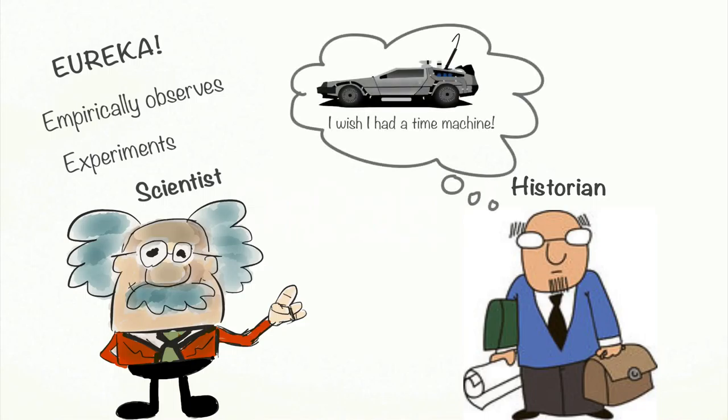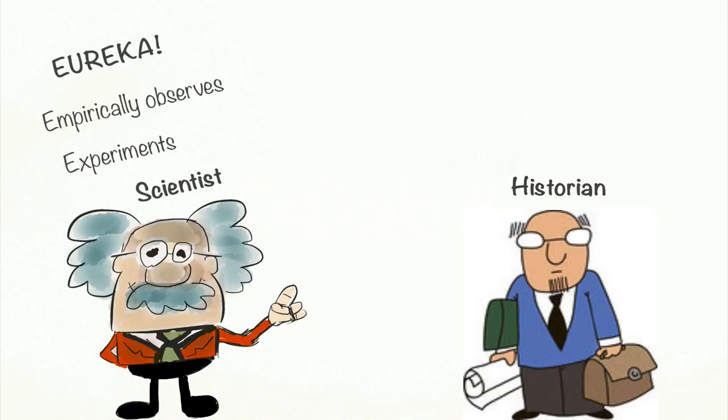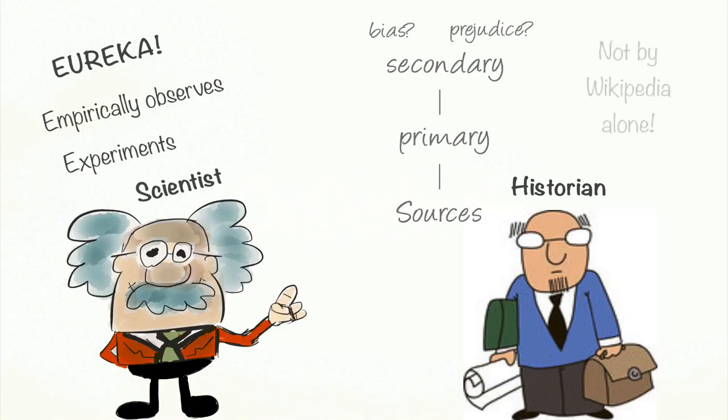But a historian cannot empirically observe that which has happened hundreds of years back. So a historian relies on sources, primary and secondary, analyzes their provenance by looking for biases and reliability, and validates by triangulation, looking at multiple sources of information to find evidence for the historical claim.